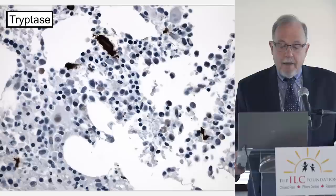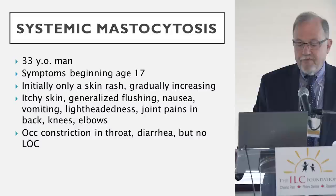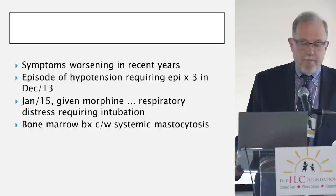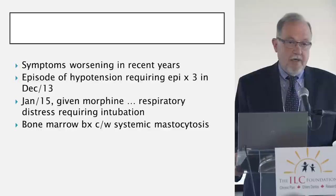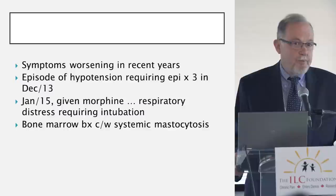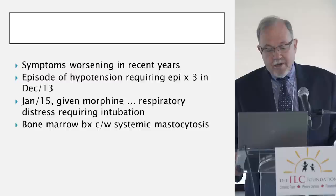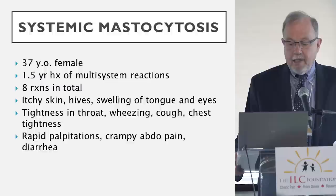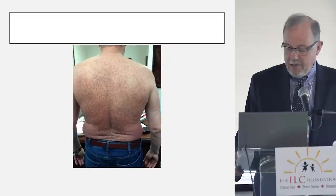Here's an example of somebody with systemic mastocytosis — a 33-year-old fellow with symptoms beginning at age 17 that intensified over time, involving multiple organ systems and developing into full-blown anaphylaxis requiring intubation to support his breathing and blood pressure. His bone marrow was consistent with a diagnosis of systemic mastocytosis. This is what his skin looks like — he's got lesions of urticaria pigmentosa, which are clusters of mast cells in the skin. Here's another fellow with mastocytosis who has even more of the same types of lesions.